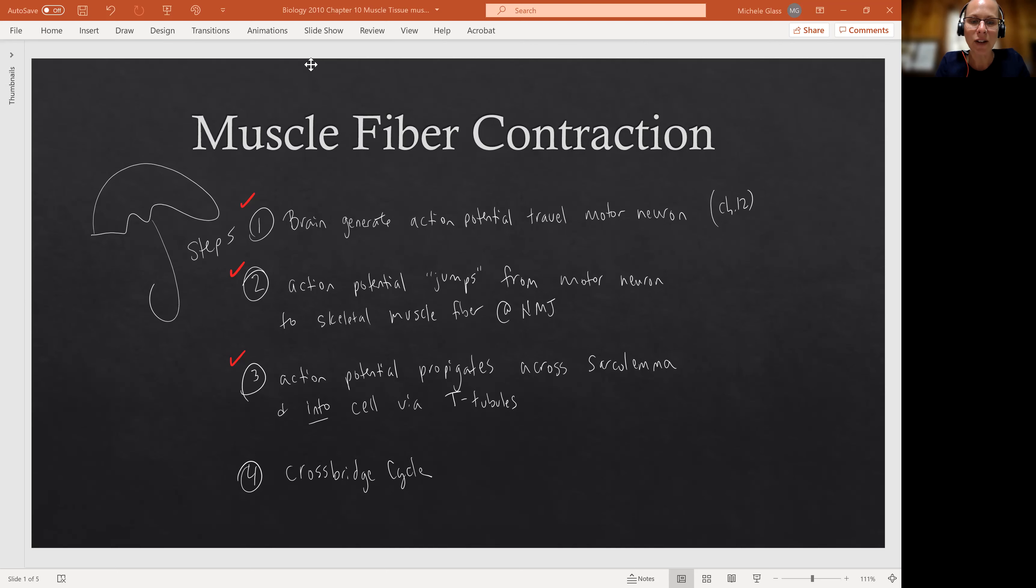And then our last video was dealing with that action potential propagating across the sarcolemma down into the cell at the T-tubule. And maybe let's add in triggering the release of calcium ion to our big step here, right? Because we said way back in our excitation contraction coupling conversation that the action potential is coupled to the contraction through the calcium ion. So we left off with that calcium ion being released from the sarcoplasmic reticulum.